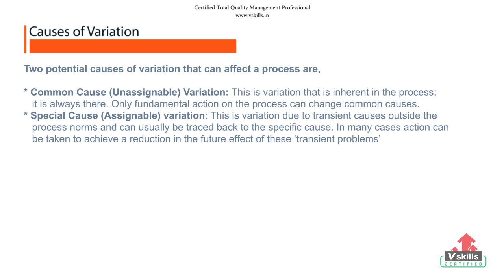At this stage, it is important to note the two potential causes of variation that can affect a process. The first is common cause variation, which is variation that is inherent in the process — it is always there. In the process of getting to work, this will mean things like waiting time at fixed traffic lights, the driver's mood and condition, or weather conditions. Only fundamental action on the process can change common causes. For example, changing route to avoid traffic lights will remove that cause of variation.